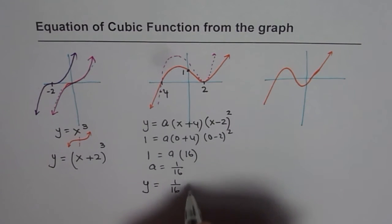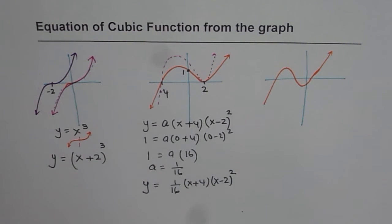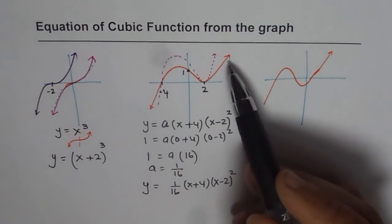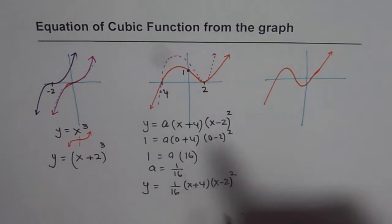And so we can write down the equation as y equals to 1 over 16 x plus 4 times x minus 2 whole square. So that becomes the equation of the graph which we initially drew with y intercept at 1. So I hope you appreciate and understand that part.